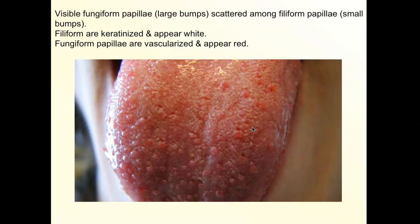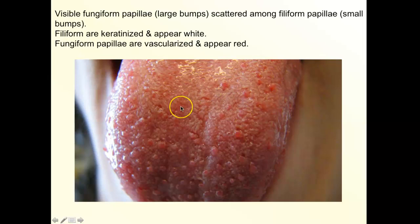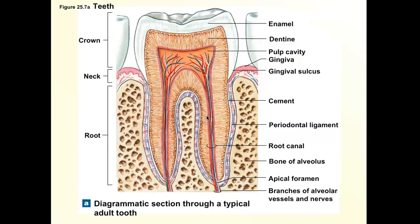Looking at an actual tongue up close, most of the tongue is coated in white bumps — those are our filiform papillae, which don't taste. Interspersed we have bigger, rounder, more red-looking papillae that have taste buds embedded in their walls. If you have a white coating on your tongue, that's not abnormal — it's the filiform papillae.